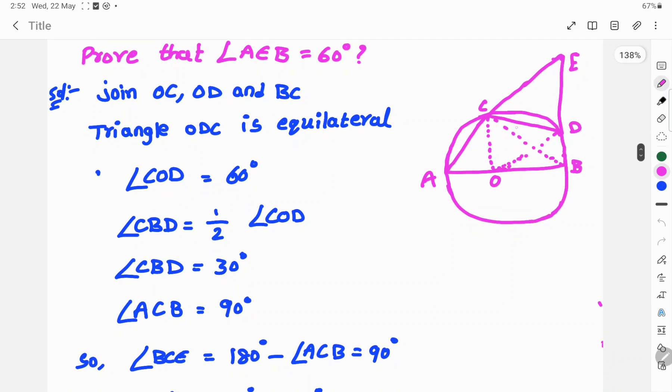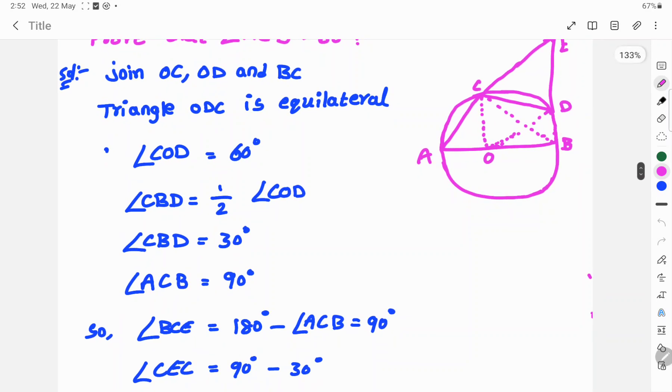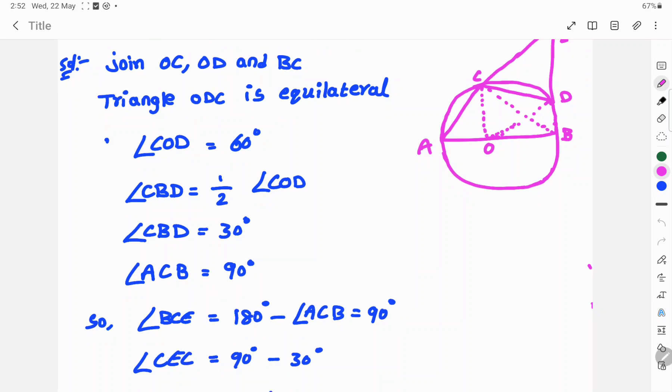Angle ACB is equal to 90 degrees. Angle BCE is equal to 180 degrees minus angle ACB, which equals 90 degrees.